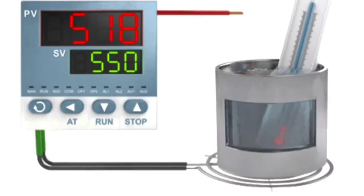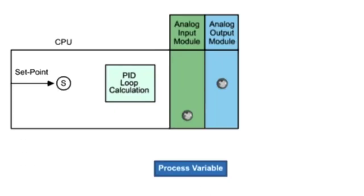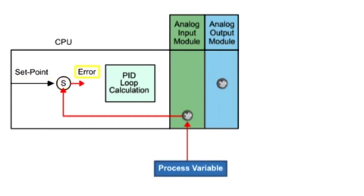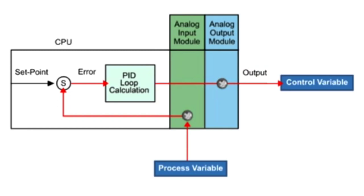PID control is a common closed-loop system used to maintain physical properties such as pressure and temperature in automated processes. The PID instruction controls the closed-loop by comparing the input or process variable from an analog input module to the system set point. The difference between the set point and the process variable is referred to as error. The error is analyzed by the PID loop calculation and provides an output or control variable to an analog output module to meet the set point defined by the system requirements.